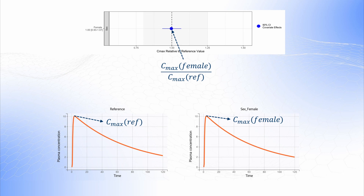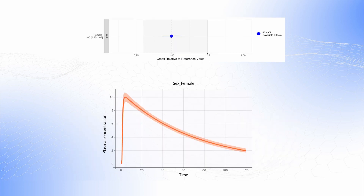We simulate these profiles using the population PK parameters estimated by Monolix. However, these parameters are estimated with some uncertainty, which is captured in the standard errors and correlation metrics of the estimates. To take this uncertainty into account, we can simulate several profiles with different sets of population parameters. This results in confidence intervals of the PK profile for a typical female and typical male subject, which we use to calculate the 90% confidence interval of the Cmax ratio, presented in the forest plot as the blue line.